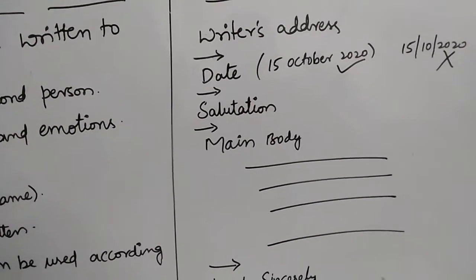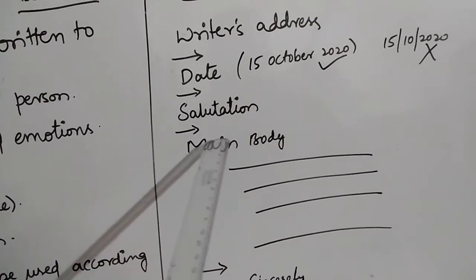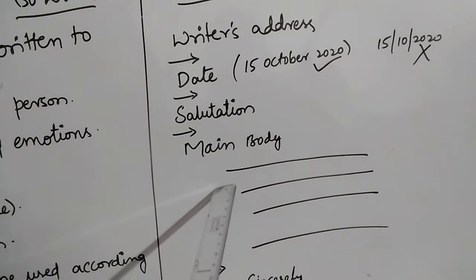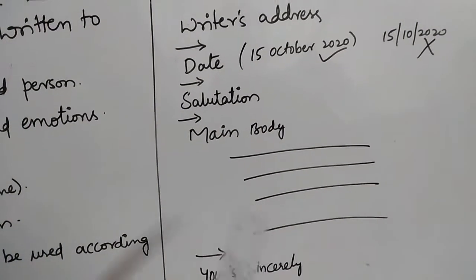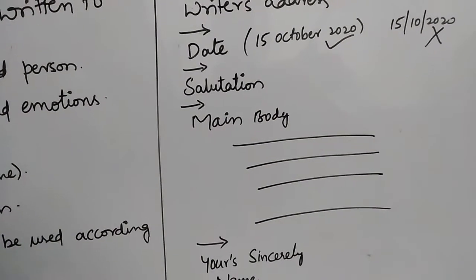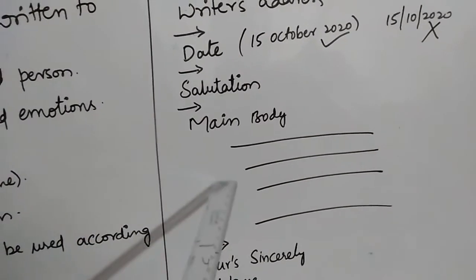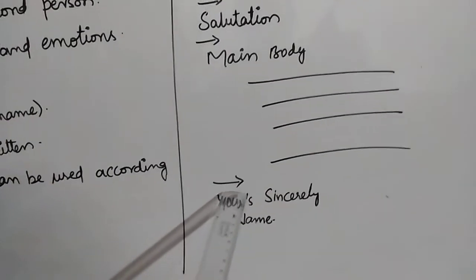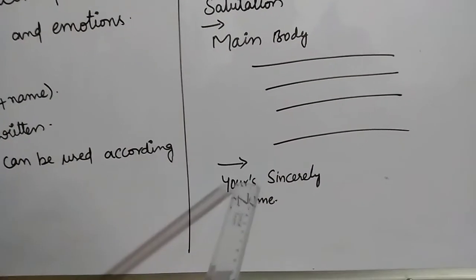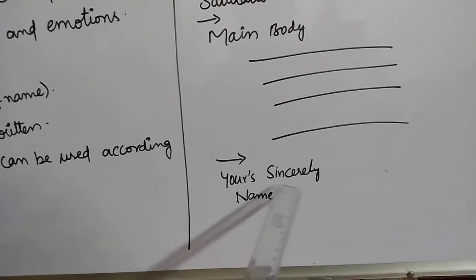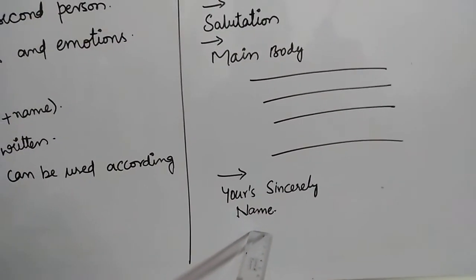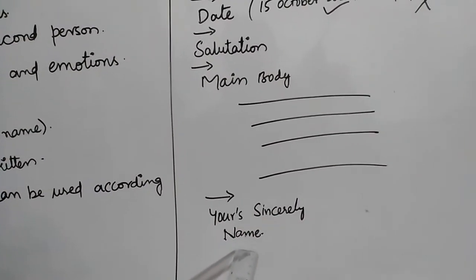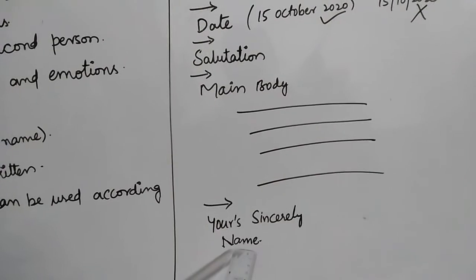After the space, write the main body — for what purpose you are writing the invitation, all those things should be included in one paragraph. Please don't write so lengthy. After the main body, leave a space, then write 'Yours sincerely' and your name. This is the simple format of informal invitation.